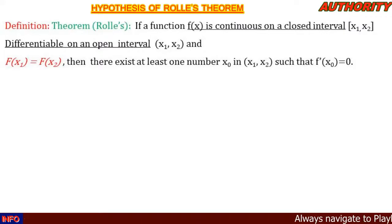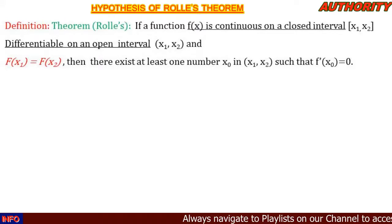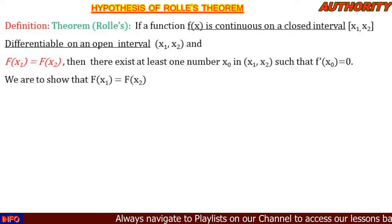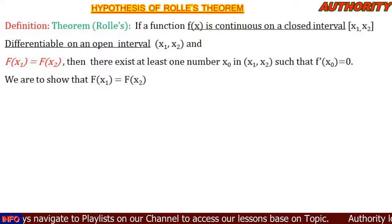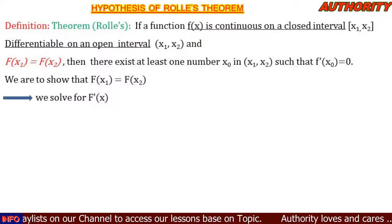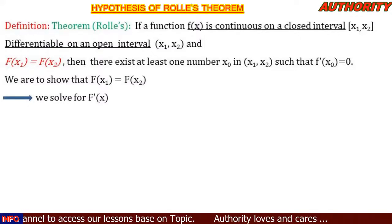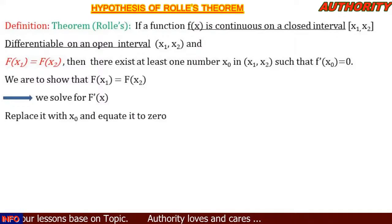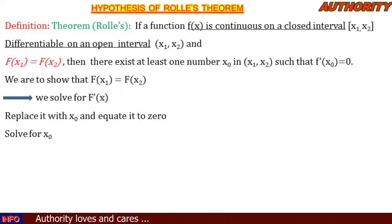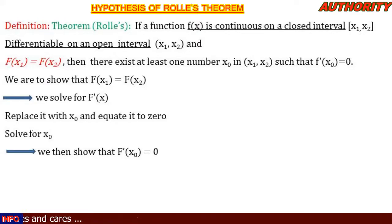Here are the steps to tackle a hypothesis of Rolle's Theorem problem. Step one: show that f(x1) is equal to f(x2). Step two: find f prime of x by differentiating, then replace x with x naught and equate to zero to solve for x naught. Step three: substitute x naught back into the differentiated function — it must give zero.